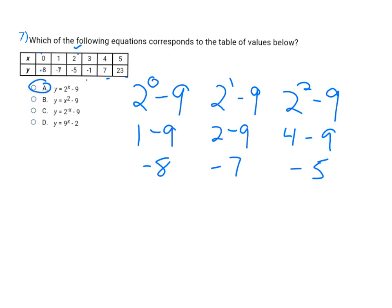I want to show you that if you had tried equation B — which I'd recommend checking on a test to rule out mistakes — substituting zero for x gives zero squared minus nine, which is zero minus nine, which is negative nine. That's not negative eight, so B can't be the answer. You can go through C and D similarly to rule them out. So my final answer is A.